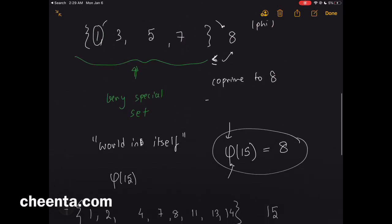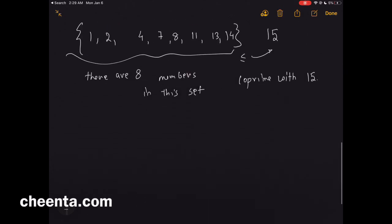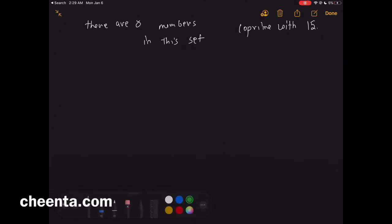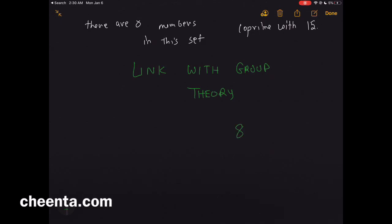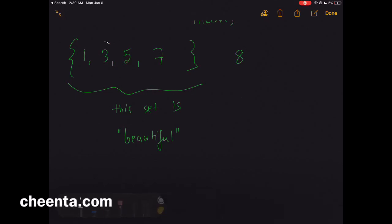You might wonder why we are interested in this set, and that's where the link to group theory comes in. If you look at the number 8 and all the numbers smaller than 8 and co-prime with 8, this set is beautiful. There is a method of combining elements in this set.